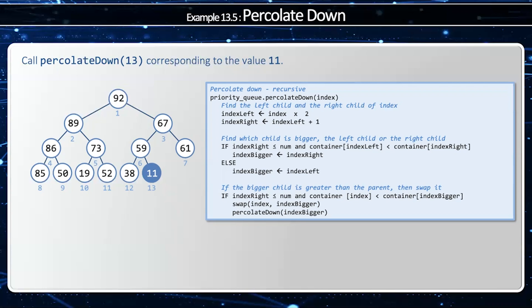Now, my number of elements is 13, which is represented in a num variable. So I'm going to find my index left and index right, which would be 26 and 27, which by the way, are greater than num. And so when I go through my first if statement, my index bigger would be my left index.